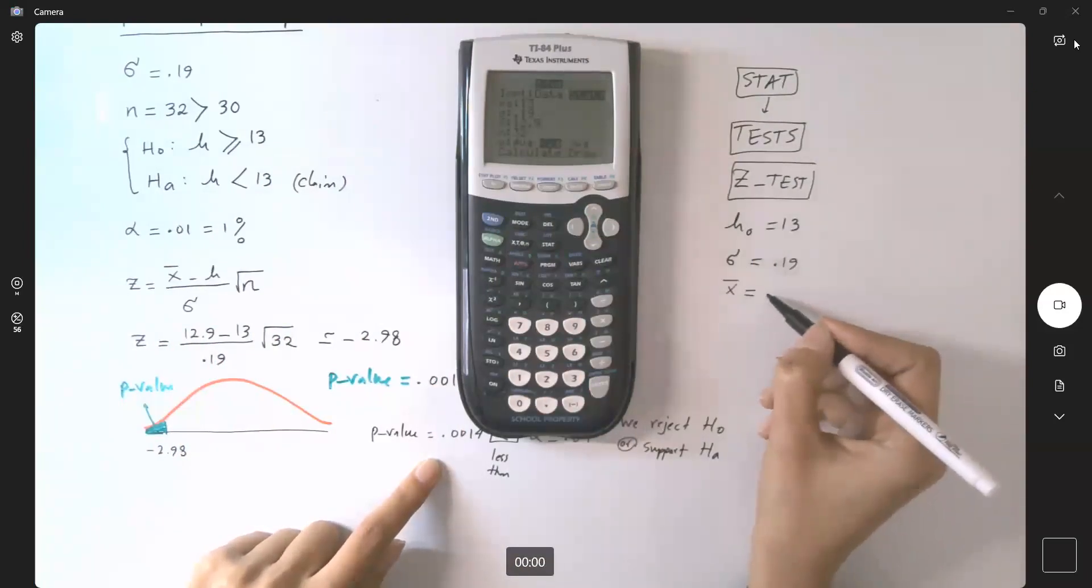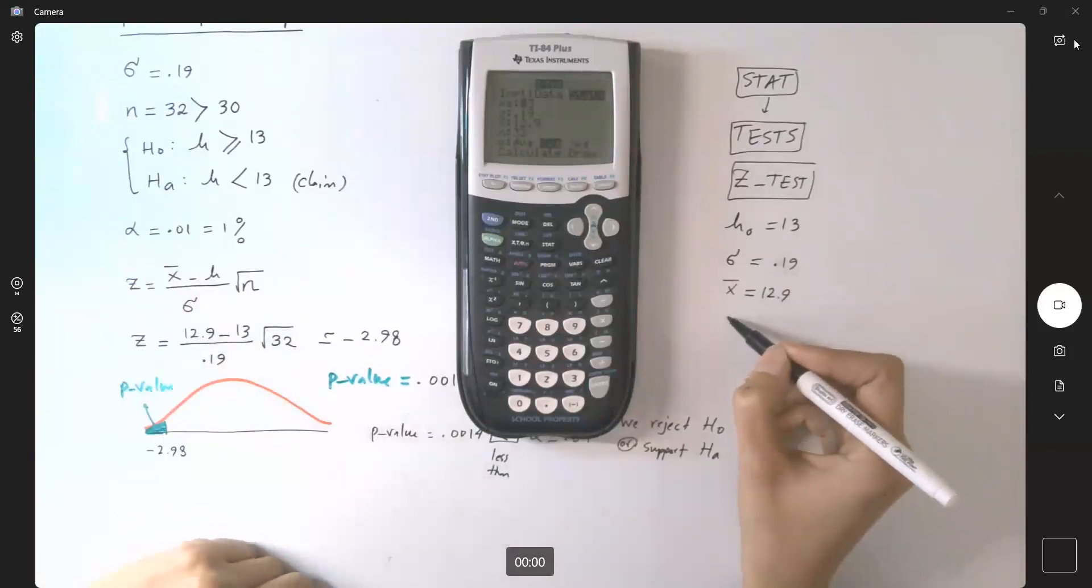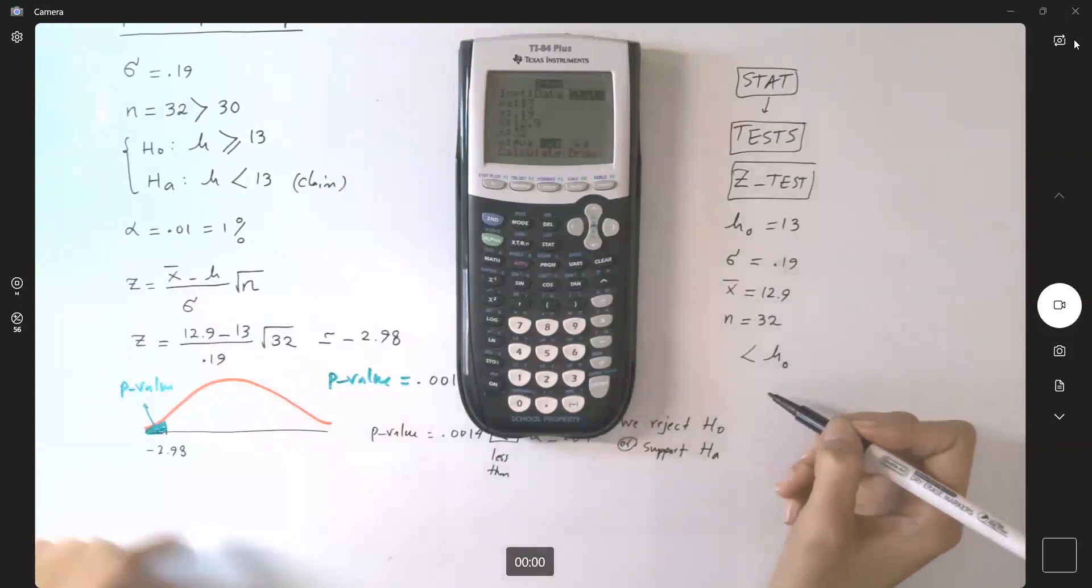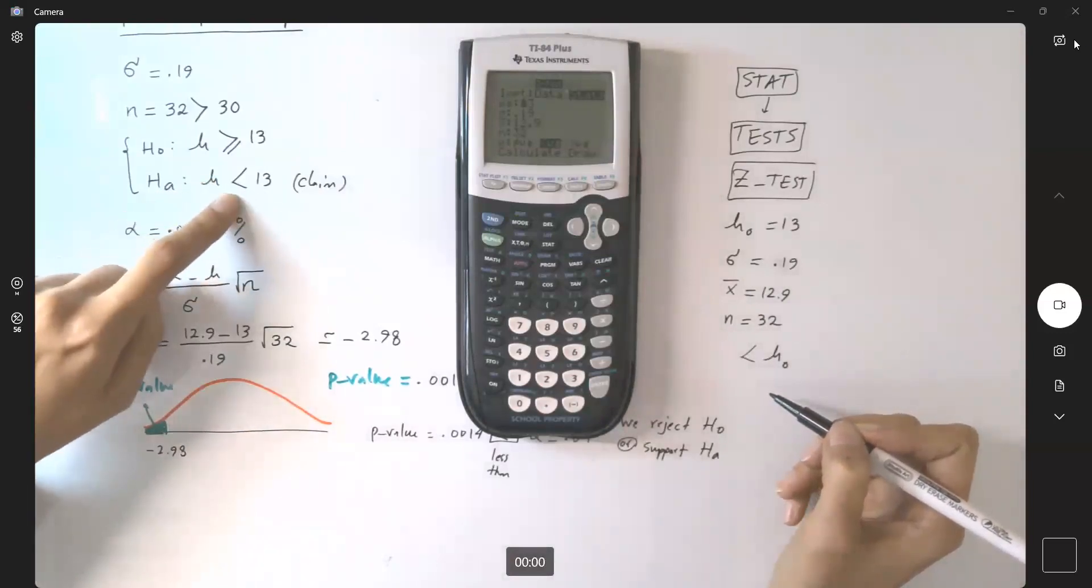X bar, or the sample average, is 12.9. Then you have n, which is the sample size, 32. And you're going to select less than. It's about 0 because it's a left-tailed graph. Less than, you always look at the alternative hypothesis.